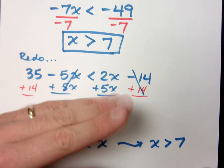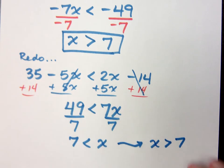See how the inequality is like chomp, chomp, chomping on the x? It's supposed to be doing the same thing if you were to rewrite that. So that's why I have x is greater than 7.